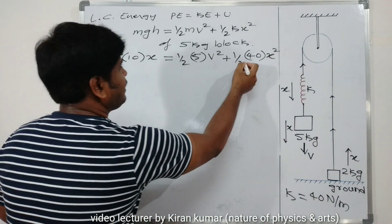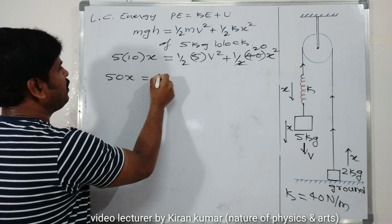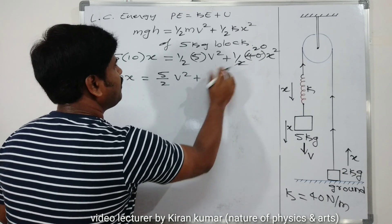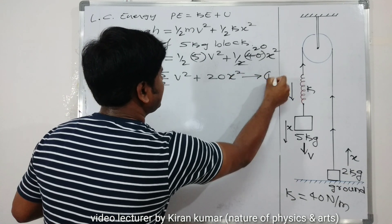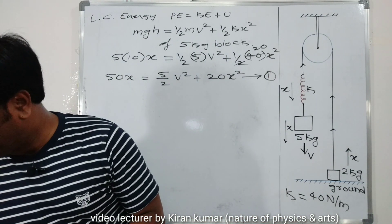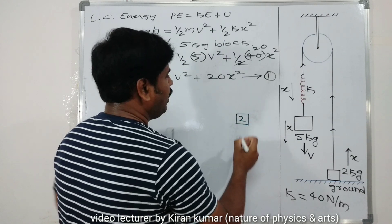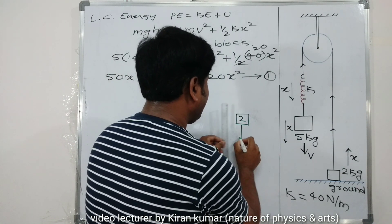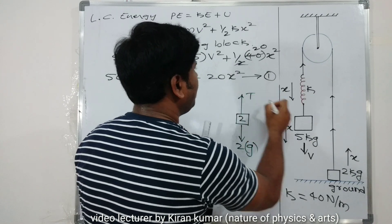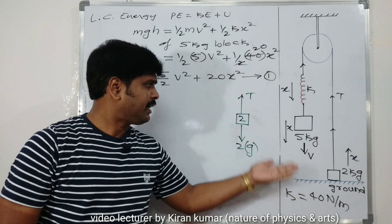Simplifying: 50x = (5/2)v² + 20x². This is Equation 1. Now for the 2 kg block, two forces are acting: mg = 2g downward and tension T acting upward. So tension T is acting in the string.